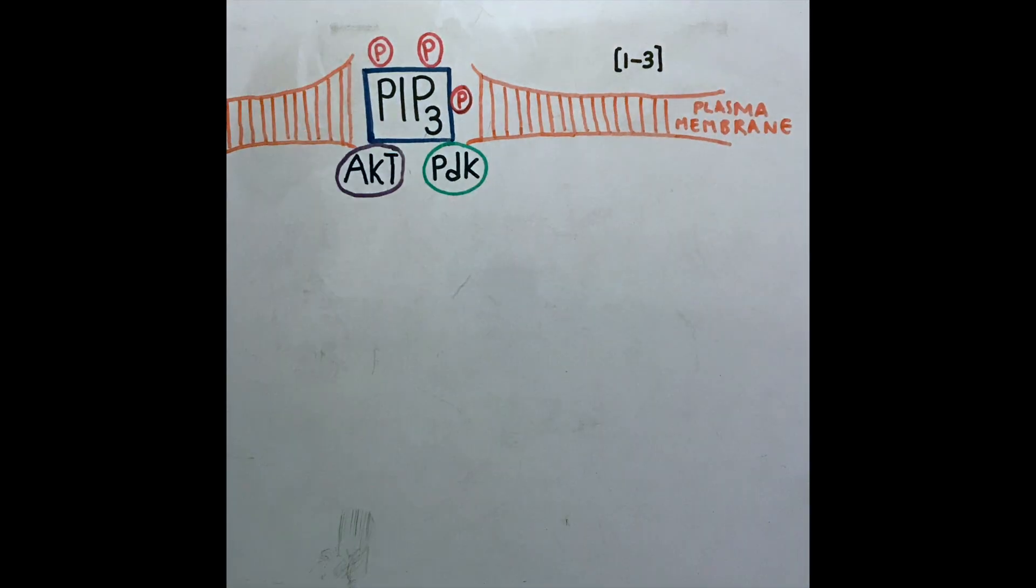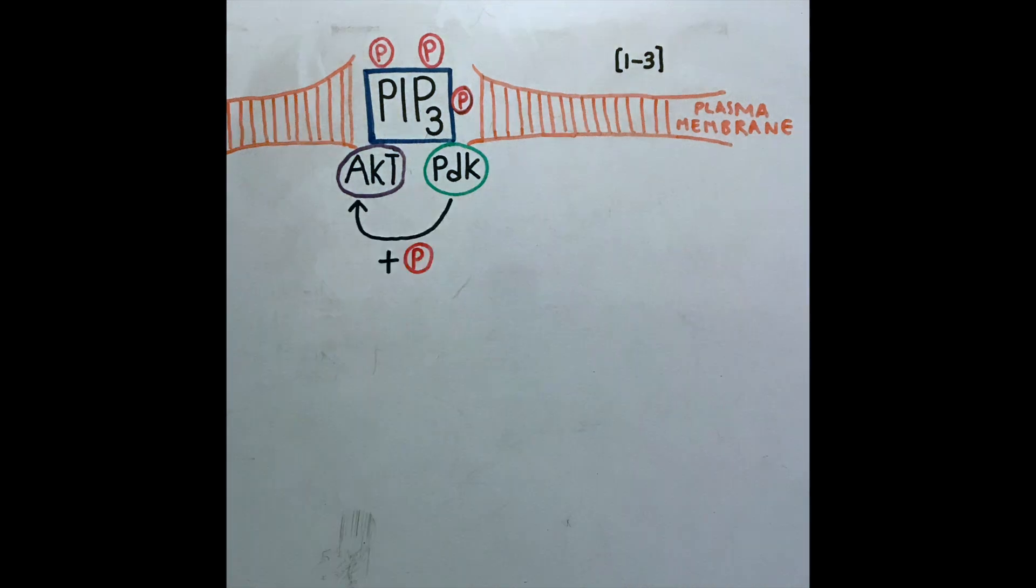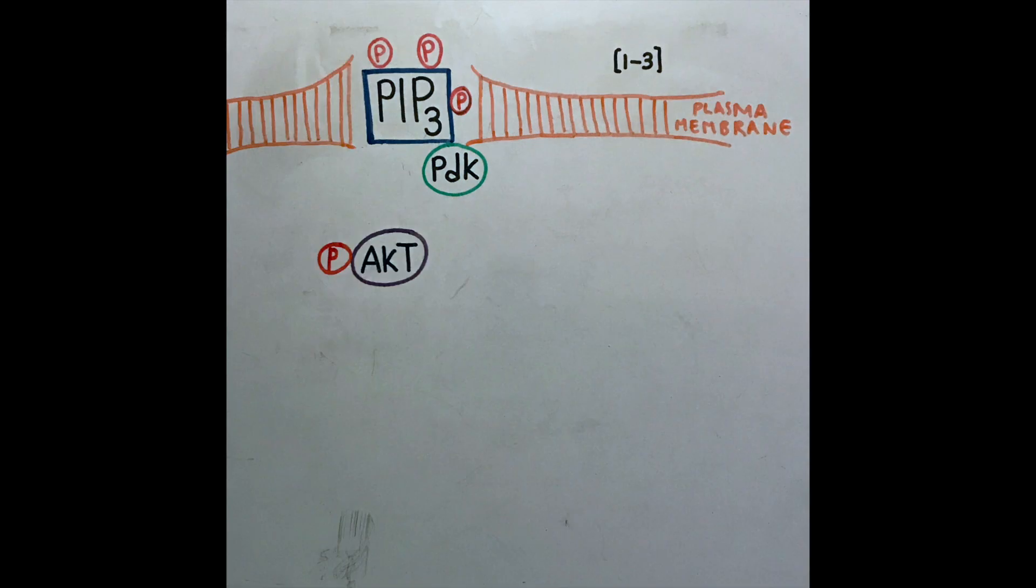PDK, now in close proximity to AKT, can phosphorylate AKT at one of AKT's two phosphorylation sites. At this point, AKT is partially active.